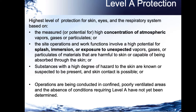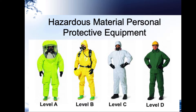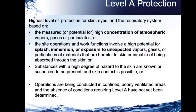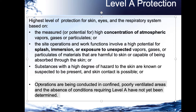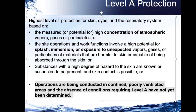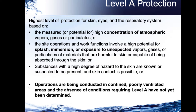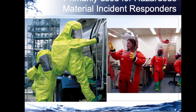Level A is selected if the site function means you're exposed to unexpected vapors or splash. This type of suit will not protect you from fire. Level A is usually used when you don't know the concentration or you're not sure of the substance. It's also used if you can be exposed through absorption — meaning it absorbs right through your skin. Most likely, we have not determined what the agent is. The self-contained breathing apparatus is on the person's back, wearing the mask, zipped into the suit, with over-boots and multiple pairs of gloves.